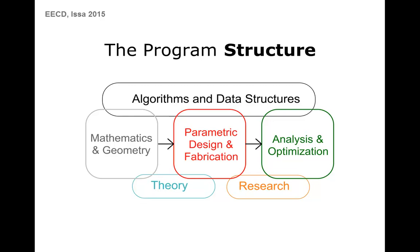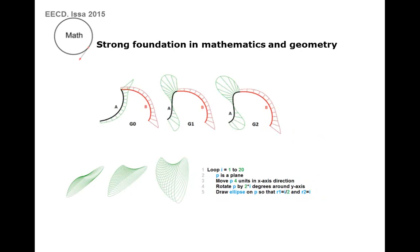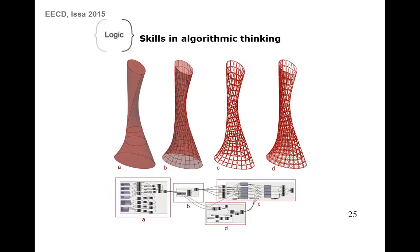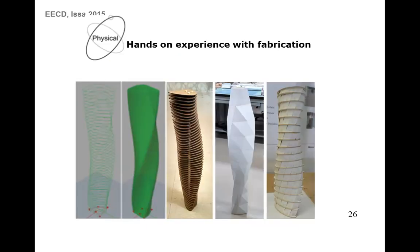The second class uses parametric design and digital fabrication to examine the link between the digital and the physical in a design context. The third class further develops students' knowledge through analysis and optimization. Throughout the program, students gradually develop their skills in algorithmic thinking and programming through incremental steps — starting with just the mass of their tower and slowly transitioning to examining an adaptive paneling system controlled by environmental constraints.